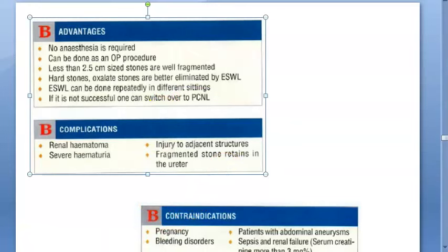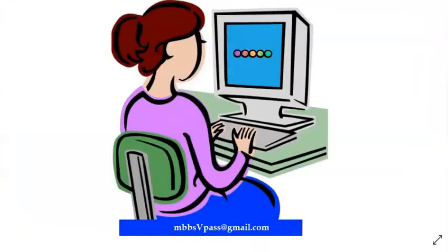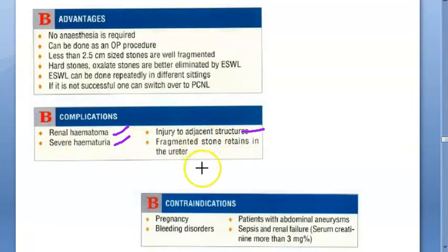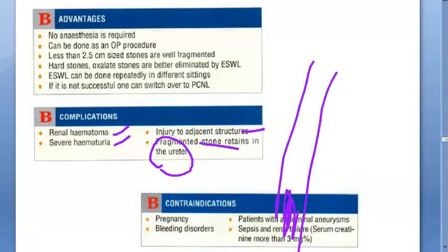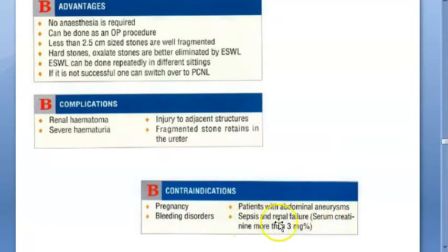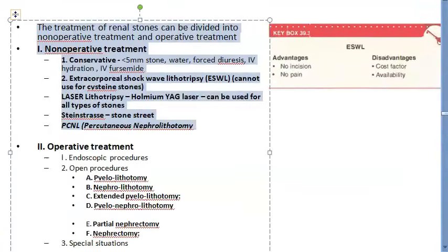ESWL can be repeated in multiple settings. If unsuccessful, you can proceed to percutaneous nephrolithotomy (PCNL). Complications of ESWL: renal hematoma, hematuria, injury to adjacent structures, and retained stone fragments causing steinstrasse. Contraindications: pregnancy, bleeding disorders, abdominal aneurysms, sepsis, and renal failure. Operative treatment will continue in the next video.